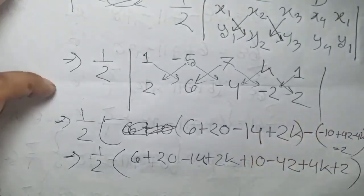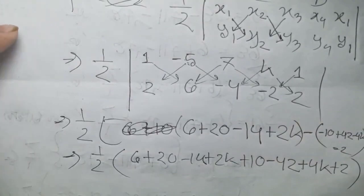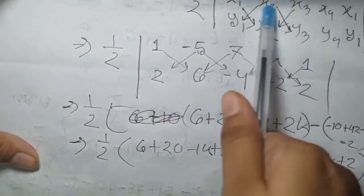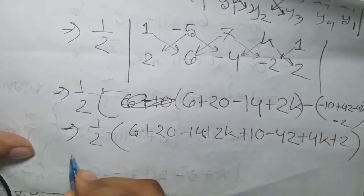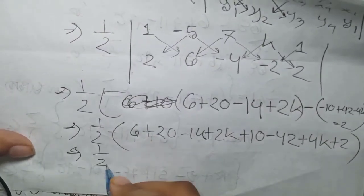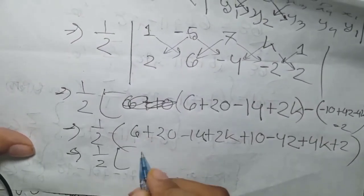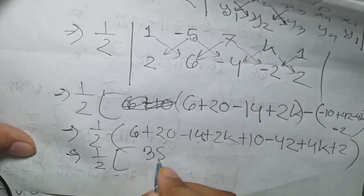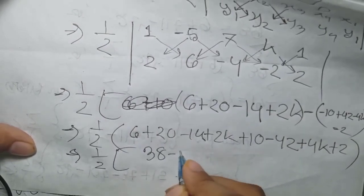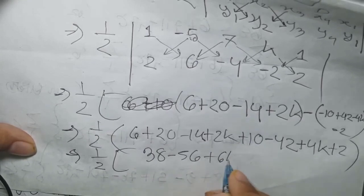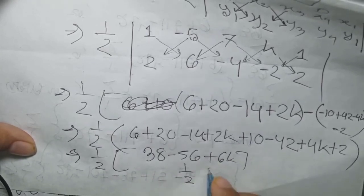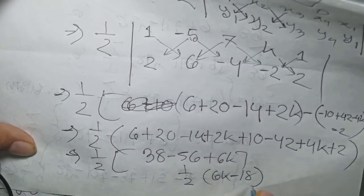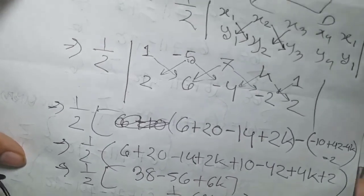So let's do this calculation. You can see the calculation. What do we do? Half into 6 minus 18.